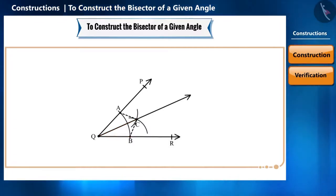We have to prove that angle AQC is equal to angle BQC. If we prove that triangle AQC and triangle BQC are congruent, then we know that the corresponding parts of congruent triangles are equal, which means their corresponding angles will also be equal.